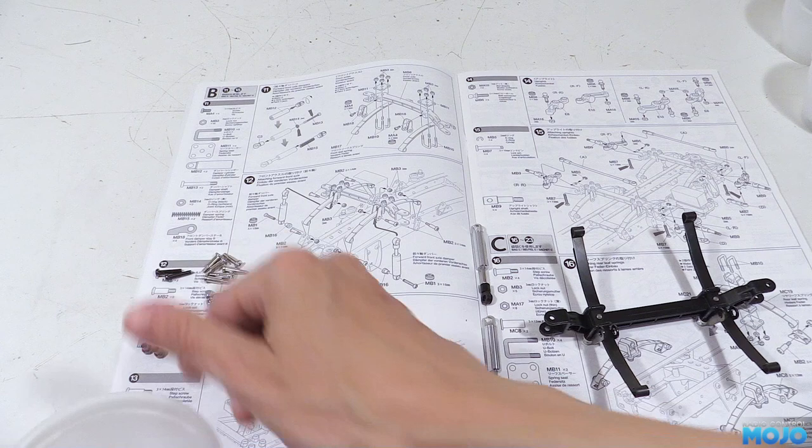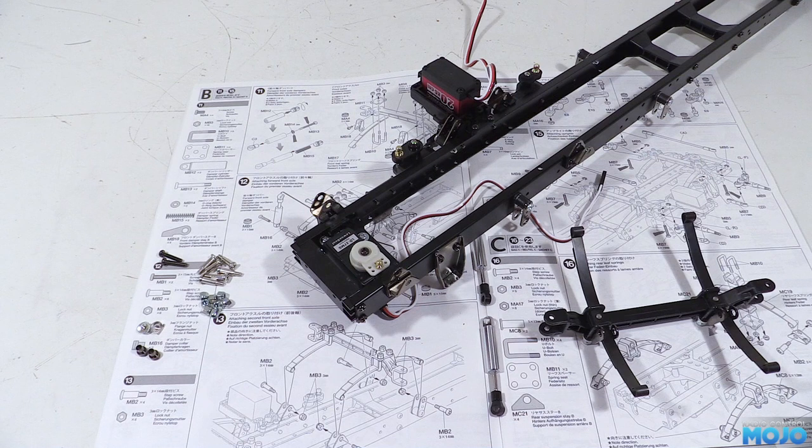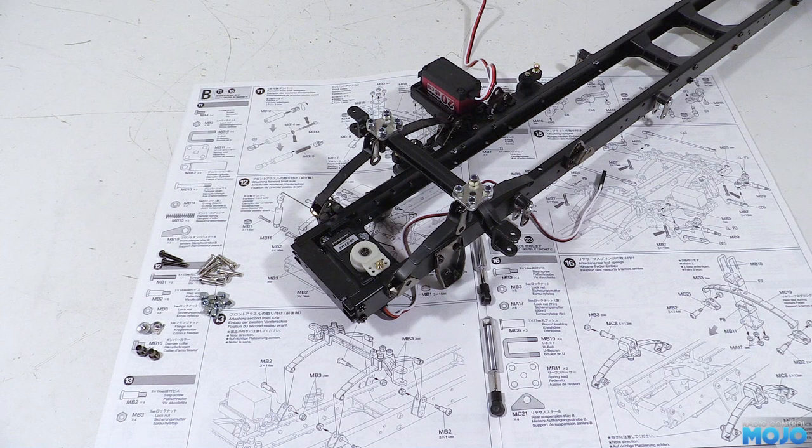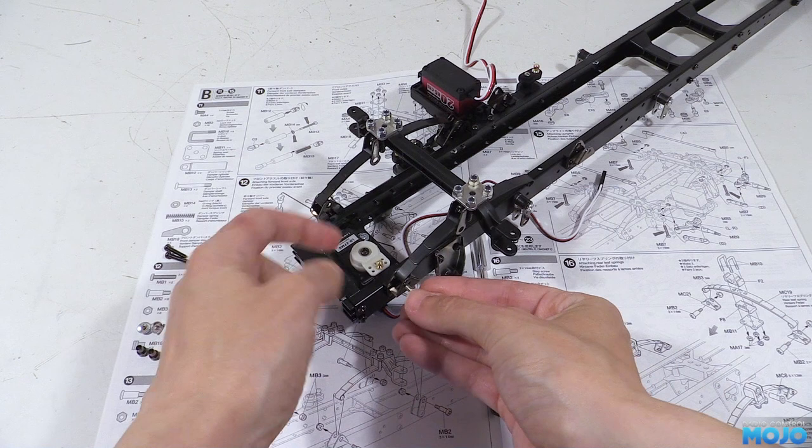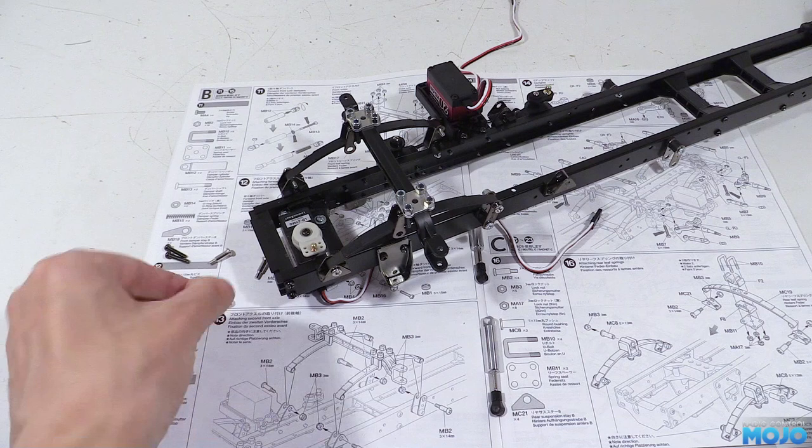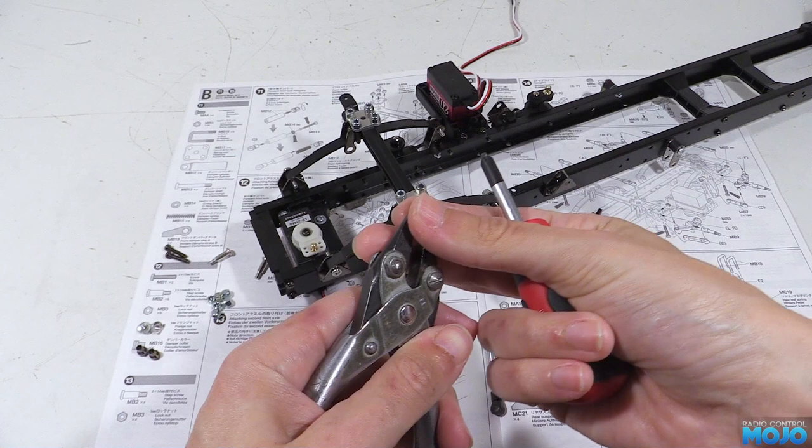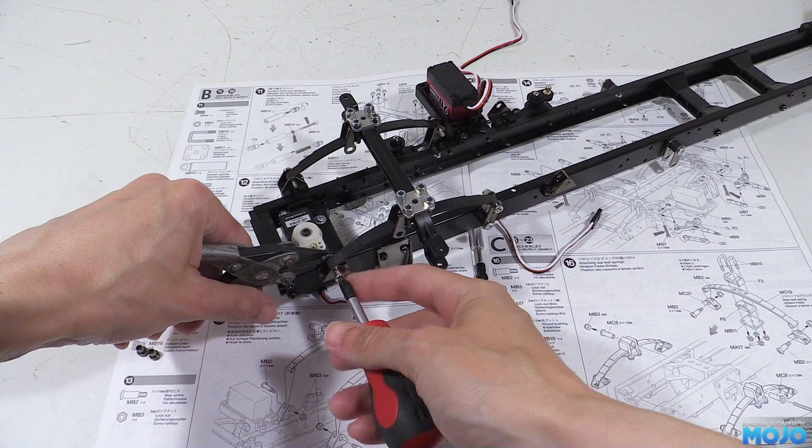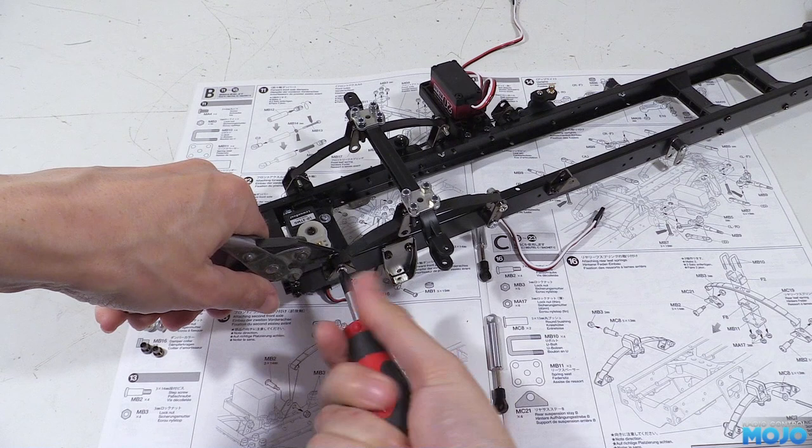We need to slot the leaf springs into the mounts and shackles on the chassis. Now because we left the nuts on the plates loose they should go in without any fuss. As we slot them in we can pop in one of the step screws from the outside. To keep them in we just need to fit one of the nylocks on each of the step screws. The one by the servo saver can be a bit tricky to get at. The kit comes with a spanner but you'll need some pliers to get it started.